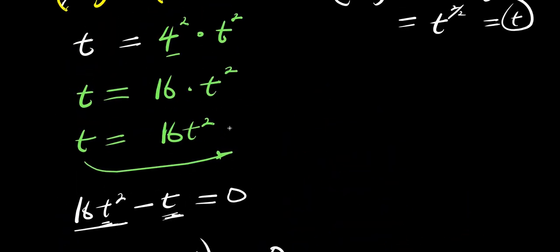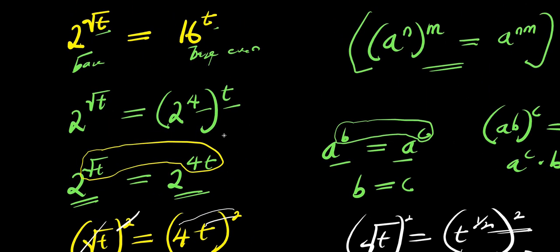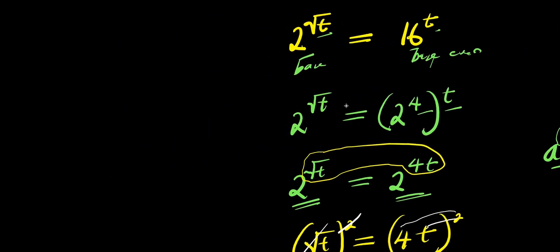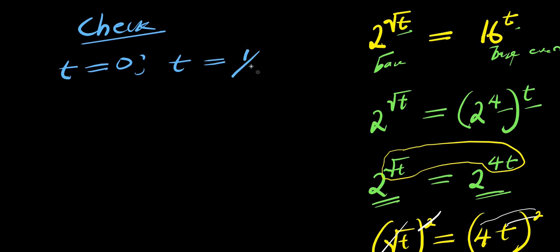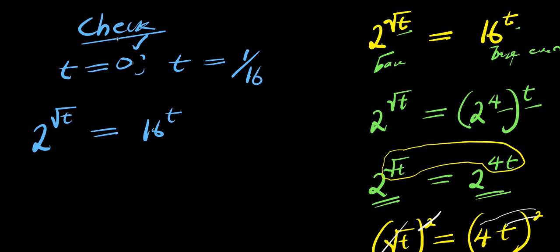Now we verify both solutions by substituting them back into the original equation 2^(√t) = 16^t. Let's start with t = 0, giving us 2^(√0) = 16^0.